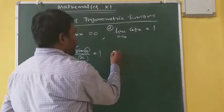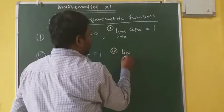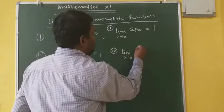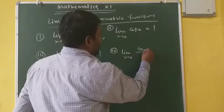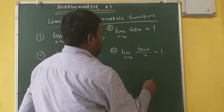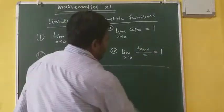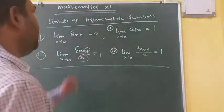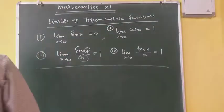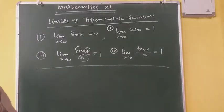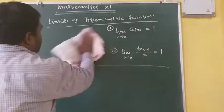And similarly, the fourth one is that limit x tends to 0 of tan x upon x will also give you 1. By using these relations, so many questions based on limits of trigonometric functions we can solve. I am taking some questions from the exercise.